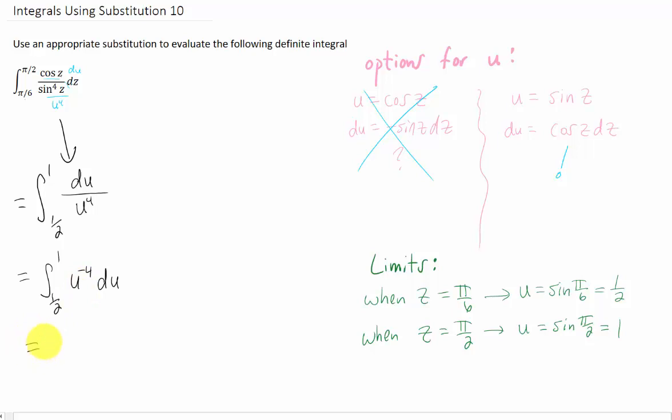And now it looks like we can just use the power rule for integration. We increase our power by 1, that makes this power negative 3. We divide by that same negative 3. We evaluate between 1 half and 1.